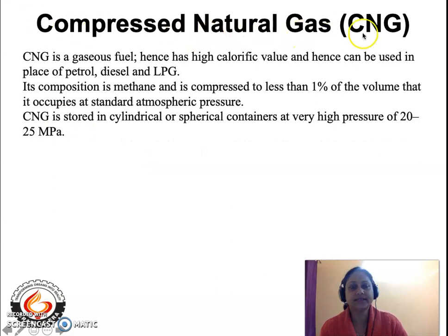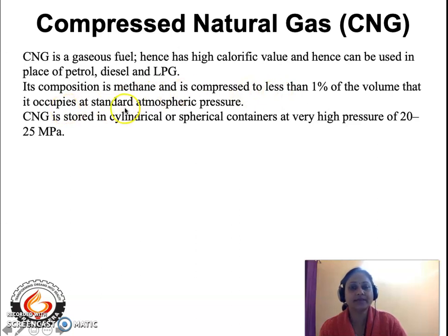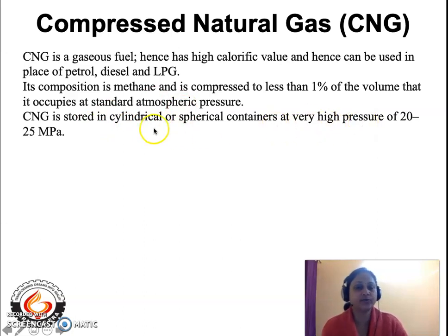Now, what is compressed natural gas or CNG? CNG is a gaseous fuel made of hydrocarbons, and its composition is mainly methane. Because it is methane, its calorific value is very high, and it can easily be used in place of petrol, diesel, and LPG. CNG is compressed to less than one percent of the volume it occupies at standard atmospheric pressure and is stored in cylindrical or spherical containers at very high pressure of 20 to 25 megapascal.